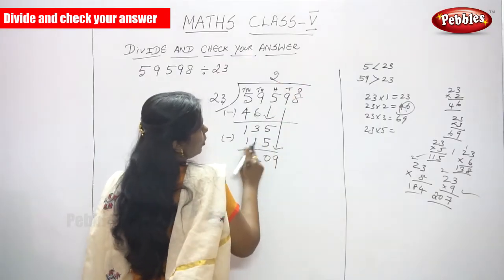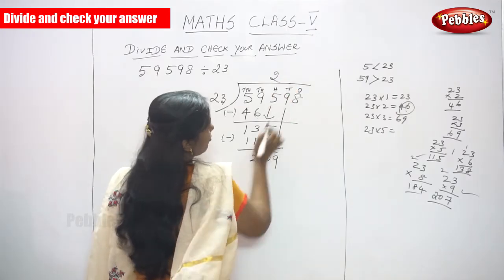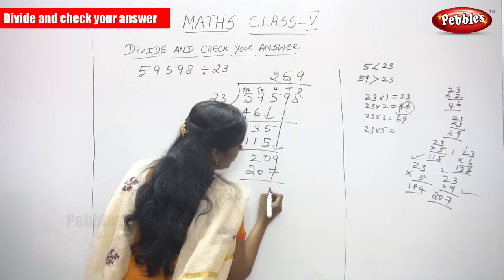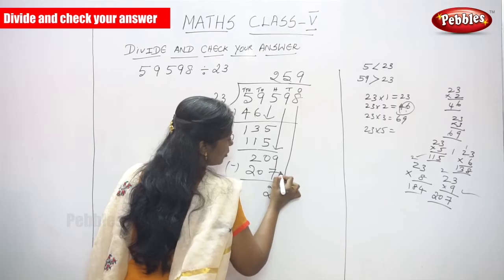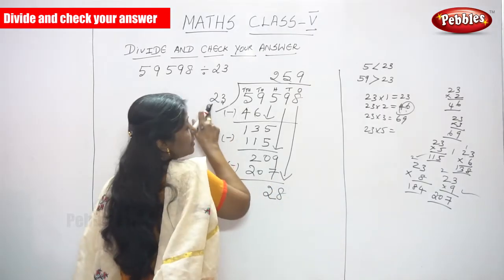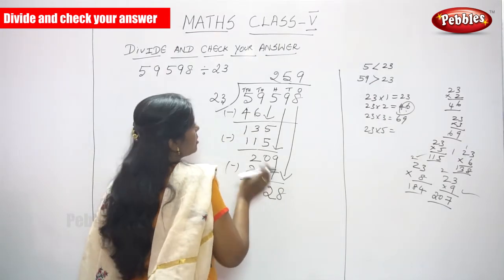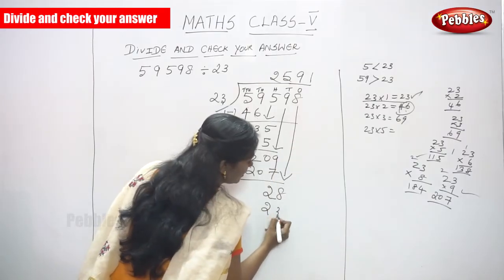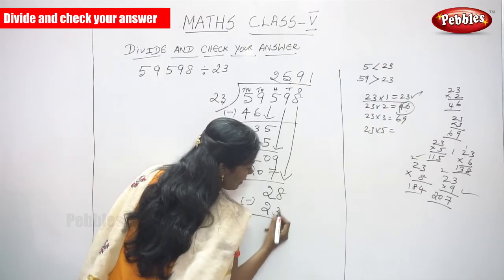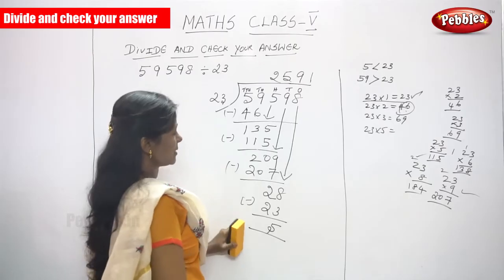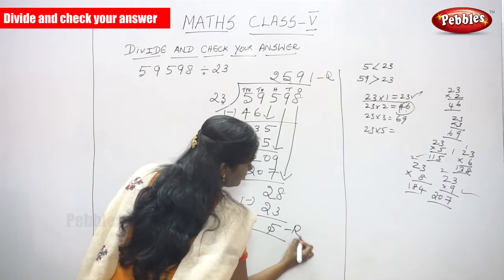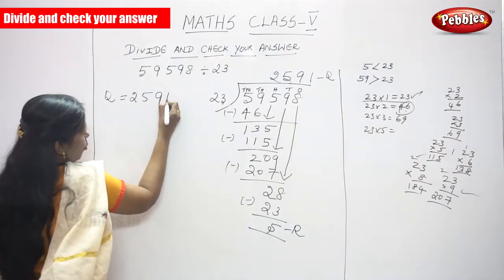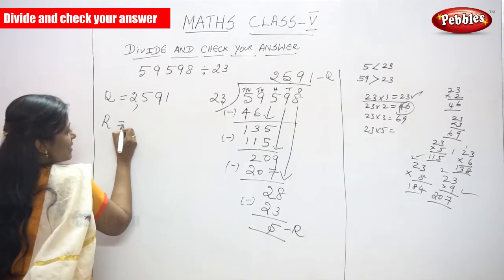Write the quotient digit. The next number is 23 into 9, that is 207. What is the remaining number? 9 minus 7 is 2. Bring down the next digit, that is 8. Now it is 28, and the divisor is 23 — 23 is less than 28 — so 23 into 1 gives 23. Write only 1. Subtract: 8 minus 3 is 5. This is the remainder. This is the quotient. So the quotient is 2, 5, 9, 9, 1 — that is 2,591. And the remainder is 5.